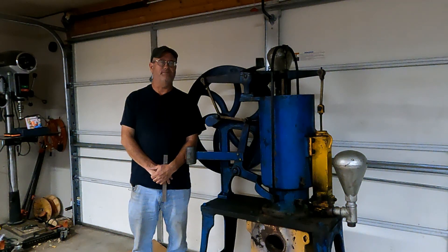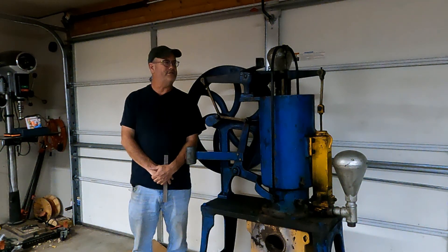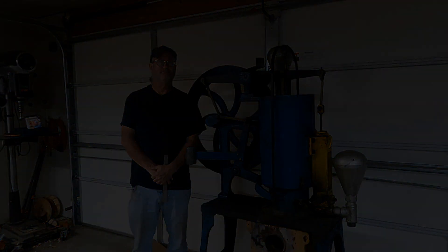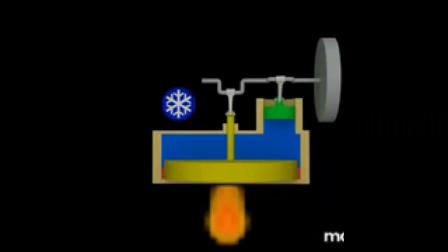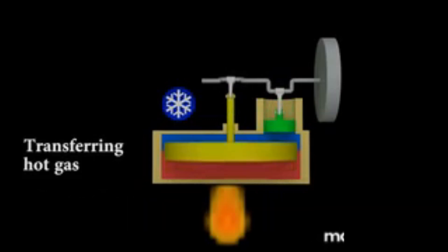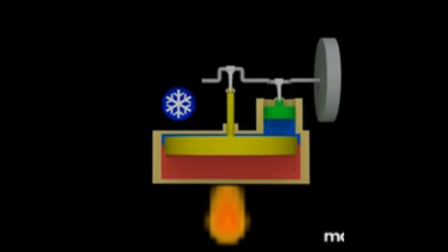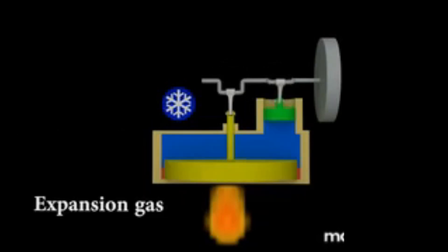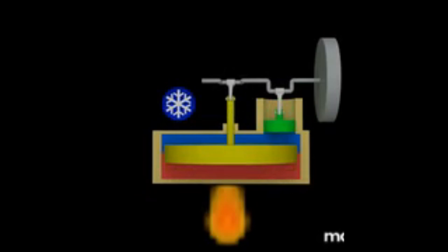We're going to go over this engine here in a little bit, but first we'll take a look at what a Stirling engine is and kind of how it works. There are three main types of Stirling engines, but they all work on the same principle: a gas when heated expands, when it's cooled it contracts.